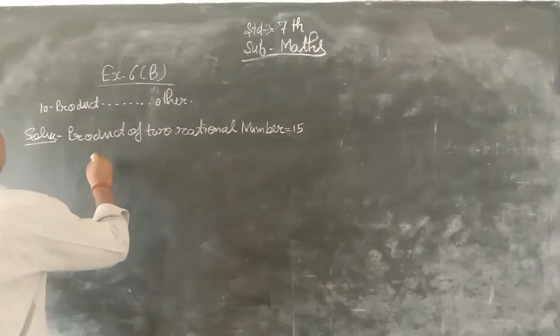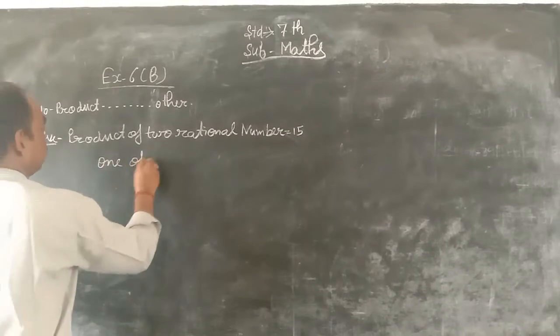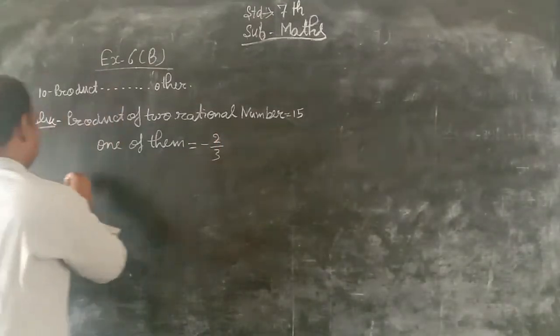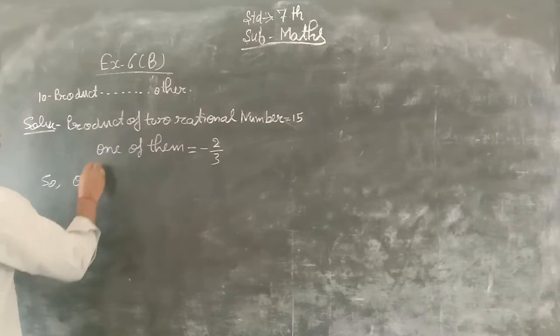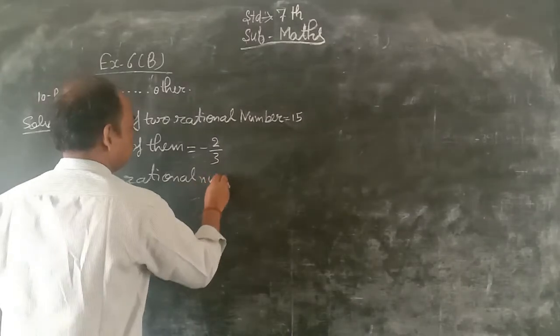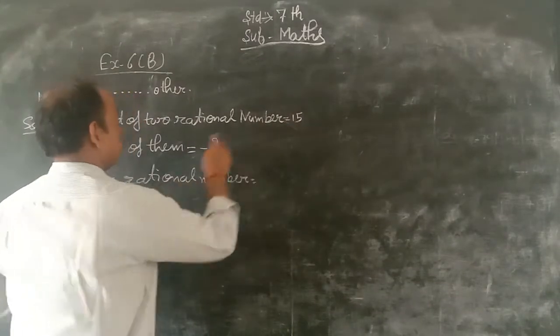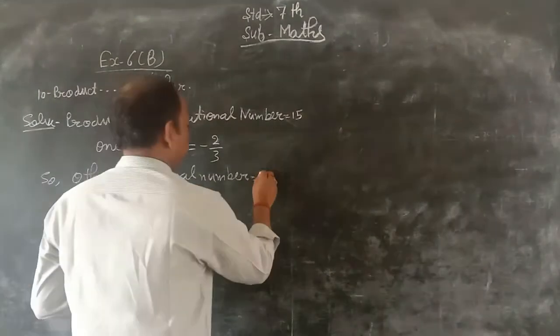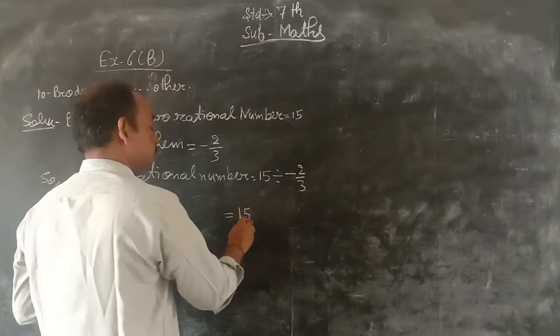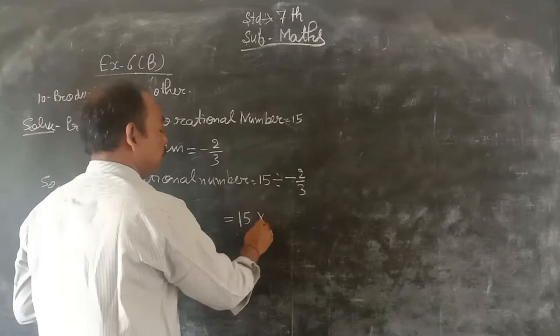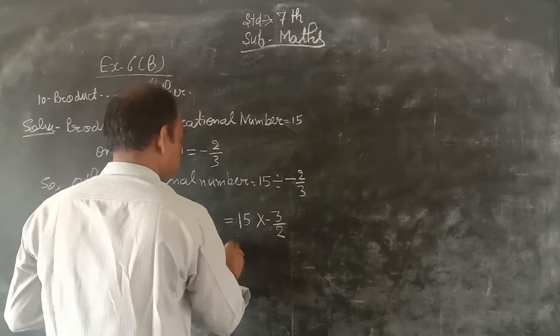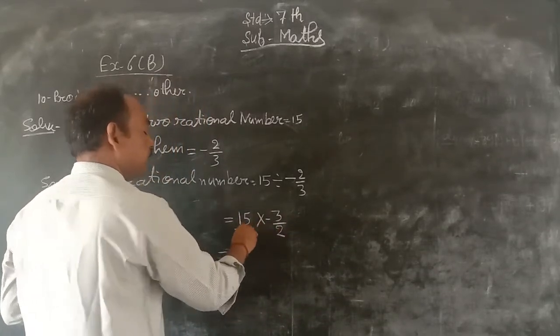One of them, the first rational number, is minus 2 upon 3. So the other rational number is equal to the product divided by the first number. So 15 divided by minus 2 upon 3. Divide changes to multiply by its reciprocal, 3 upon minus 2. So this rational number is equal to minus 45 upon 2.